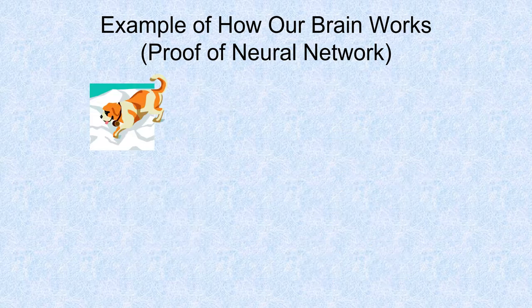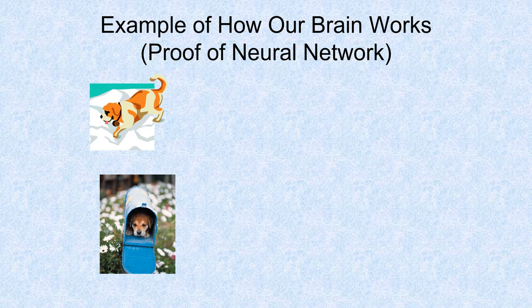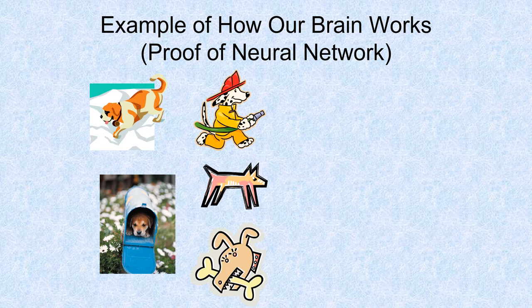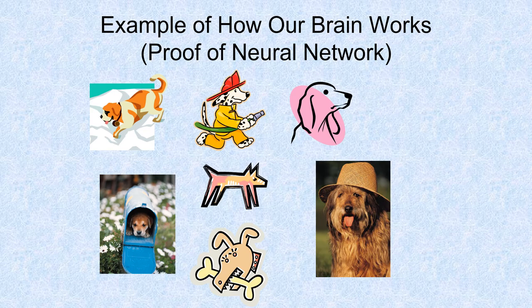If you were to program a computerized device to recognize a dog, you'd have to plug in certain characteristics for it to look for — for example, four legs, four paws, a wet nose, and a tail. But look at these pictures: this is a dog, and our brain can determine that. A computerized device would have trouble with a dog in a mailbox — it's not a usual picture. Here's a cartoon of a dog, evoking different emotions and memories. This looks like a mean dog. Here's a noble dog. Here's a dog having fun wearing a hat. This is a dog even though it's somewhat abstract.